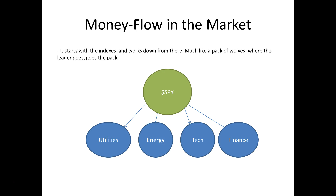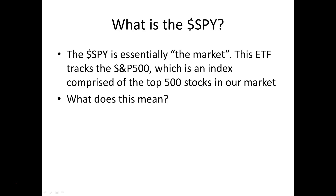Here's how money flows in the market: it starts with the indexes and works its way down. Much like a pack of wolves, wherever the leader goes, goes the pack. In our market, we can look at the SPY as the leader. When you hear people talk about 'the market,' they're talking about the S&P 500, and the SPY is simply an ETF that tracks the S&P 500.